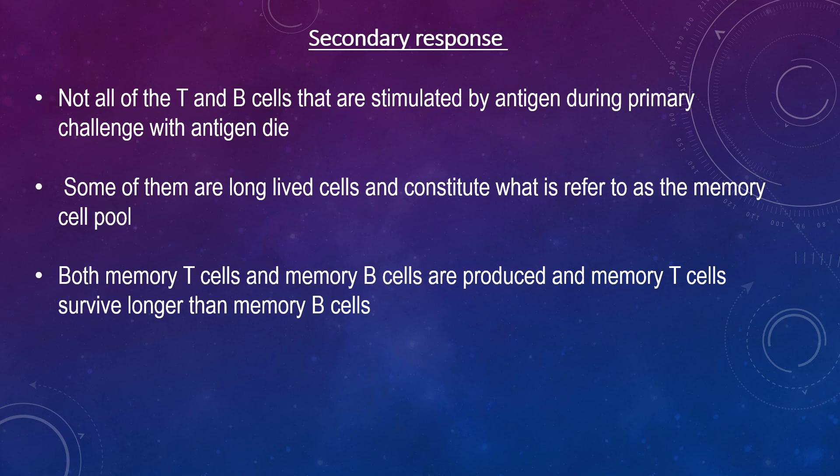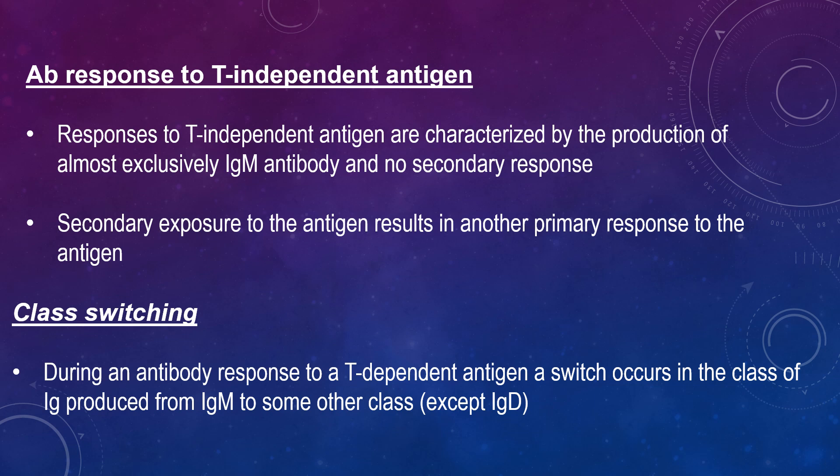IgG is produced earlier in the secondary response. Since there is an expanded clone of memory T cells which can help B cells switch to IgG, IgA, or IgE production, the predominant class produced after a secondary challenge is IgG, IgA, or IgE. Regarding antibody responses to T-independent antigens, these responses are characterized by the production of almost exclusively IgM antibodies and no secondary response. During an antibody response to a T-dependent antigen, a class switch occurs from IgM to some other class except IgD. During class switching, a DNA rearrangement occurs between a switch site between the rearranged VDJ region and a switch site before one of the heavy chain constant regions.